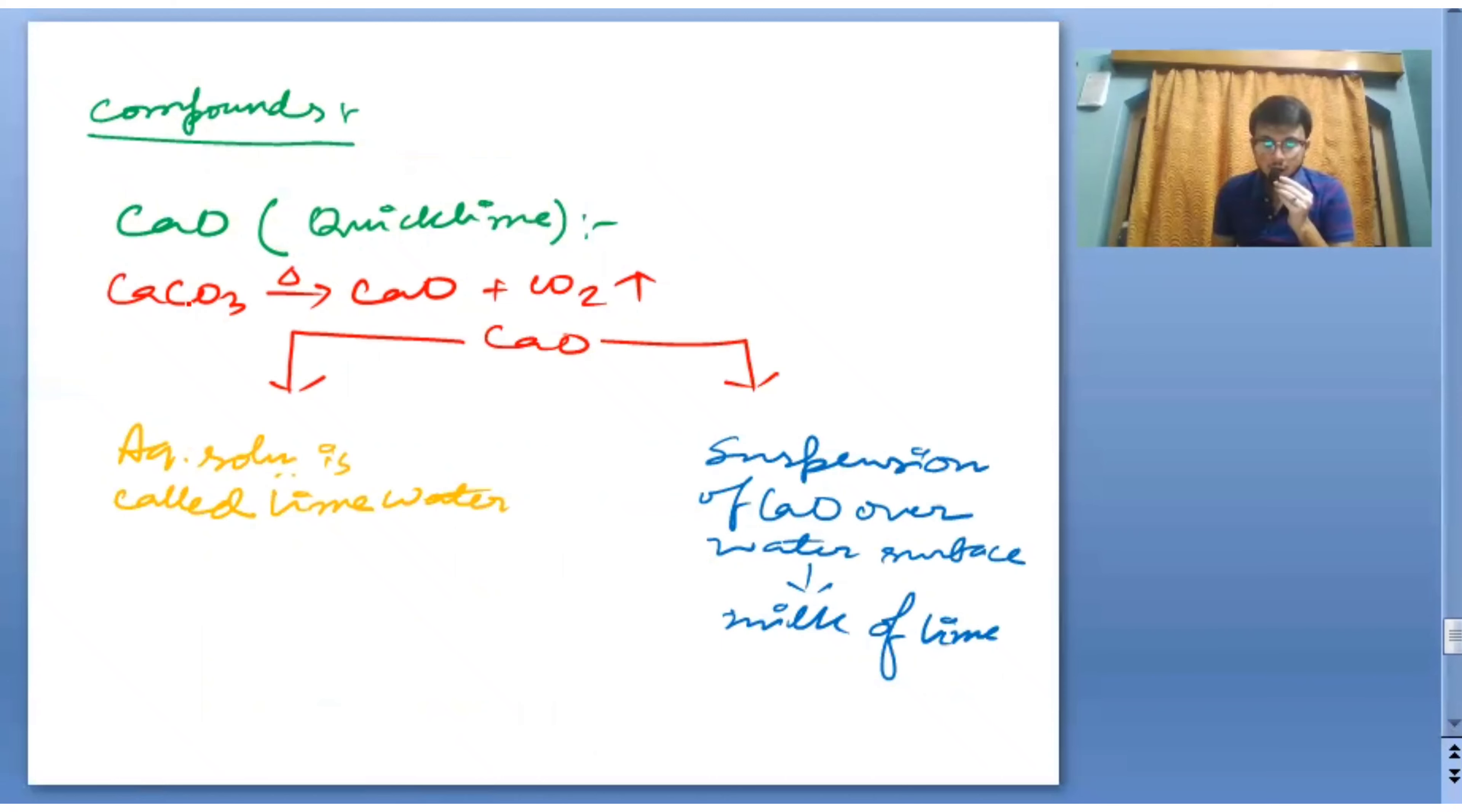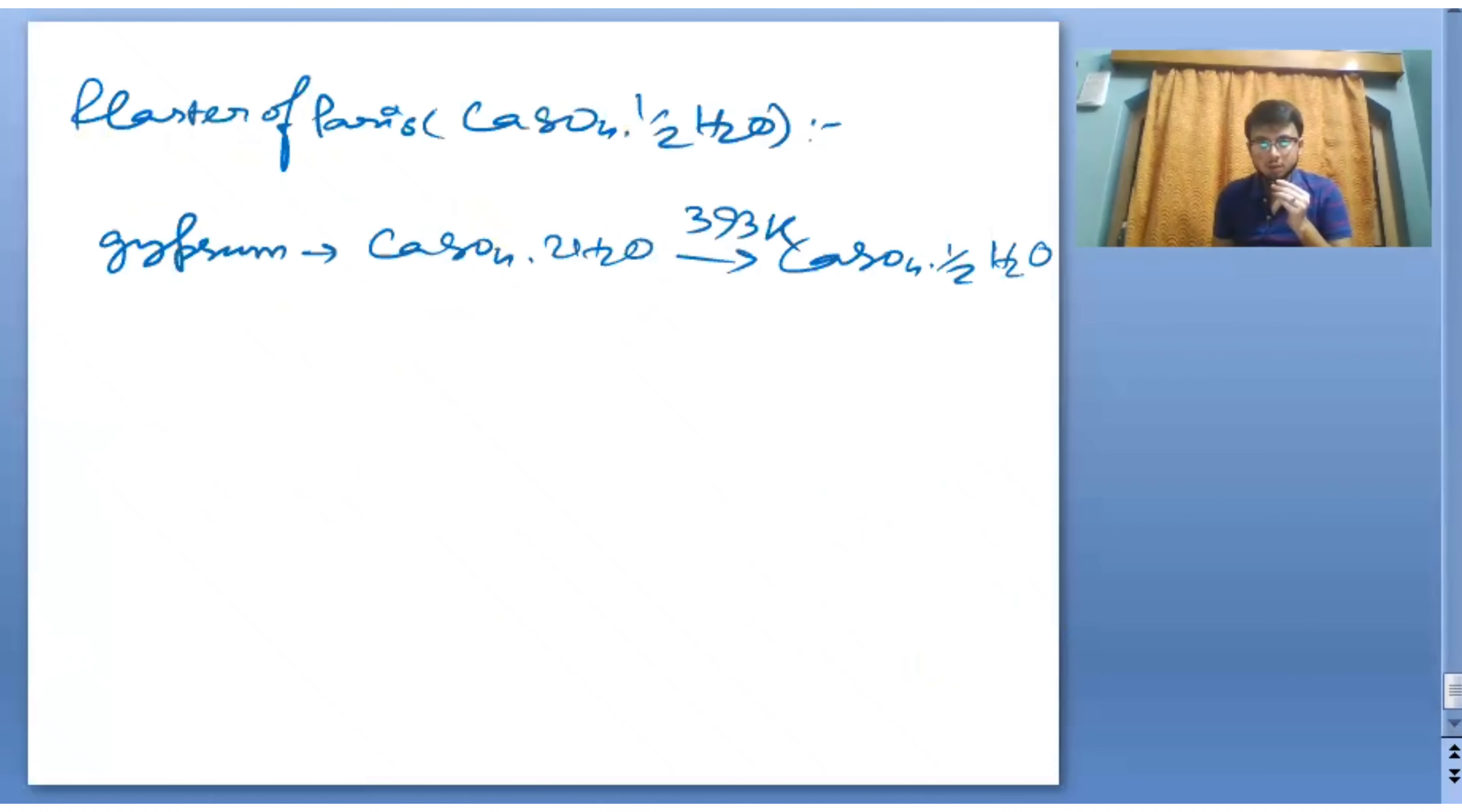Then some other compounds: CaO quick lime. CaO is prepared from CaCO3 heated, then it forms CaO plus CO2 evaporates. If CaO makes an aqueous solution, it will be called lime water. If it forms a suspension of CaO over water surface, that will be called milk of lime. The last compound is plaster of Paris, CaSO4·½H2O. It is prepared from gypsum CaSO4·2H2O heated over 393 Kelvin. That's it for S block elements.